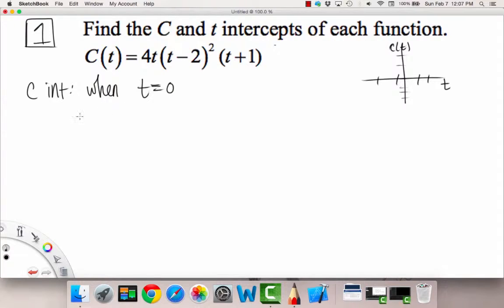That's our vertical intercept. We're just going to plug in a zero, so we get four times zero times—it doesn't even matter because we have a zero times other things, so that's just going to be a zero. So our c-intercept is going to be (0, 0).